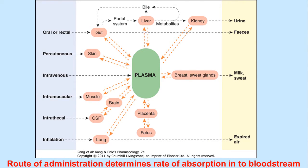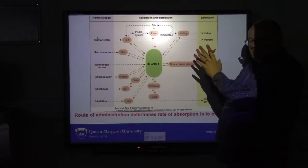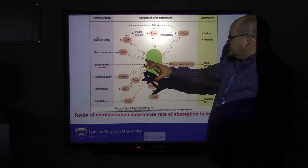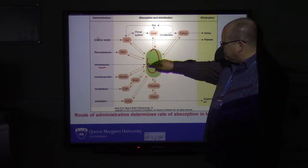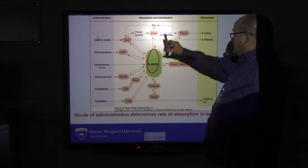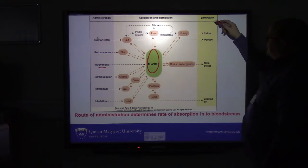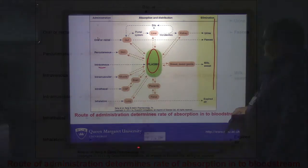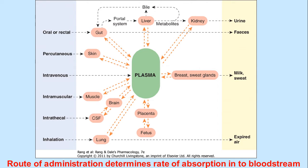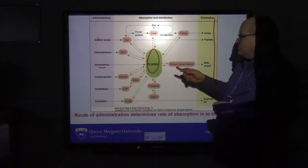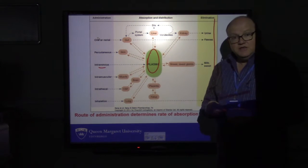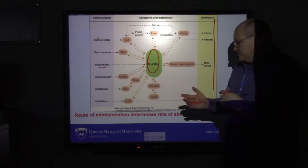Administration can be rectal, through the skin — percutaneous — intravenous directly into the blood vessel, intramuscular, intrathecal into the cerebrospinal fluid, or even inhalation into the lung. All these routes of administration ultimately end up in the plasma, from where drugs can be distributed around the body and eventually eliminated in the urine, faeces, sweat, and expired air. We're going to look at each of these routes and discuss the pros and cons, advantages and disadvantages of each.